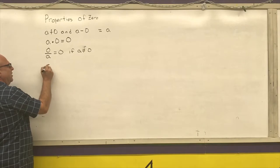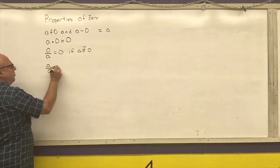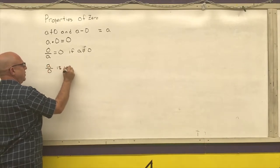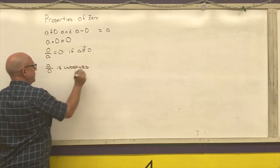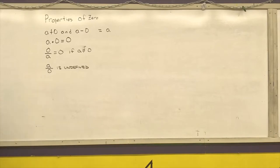And the next to last one, A over 0 is undefined. You are not allowed to divide by 0, that's one of our primary rules.